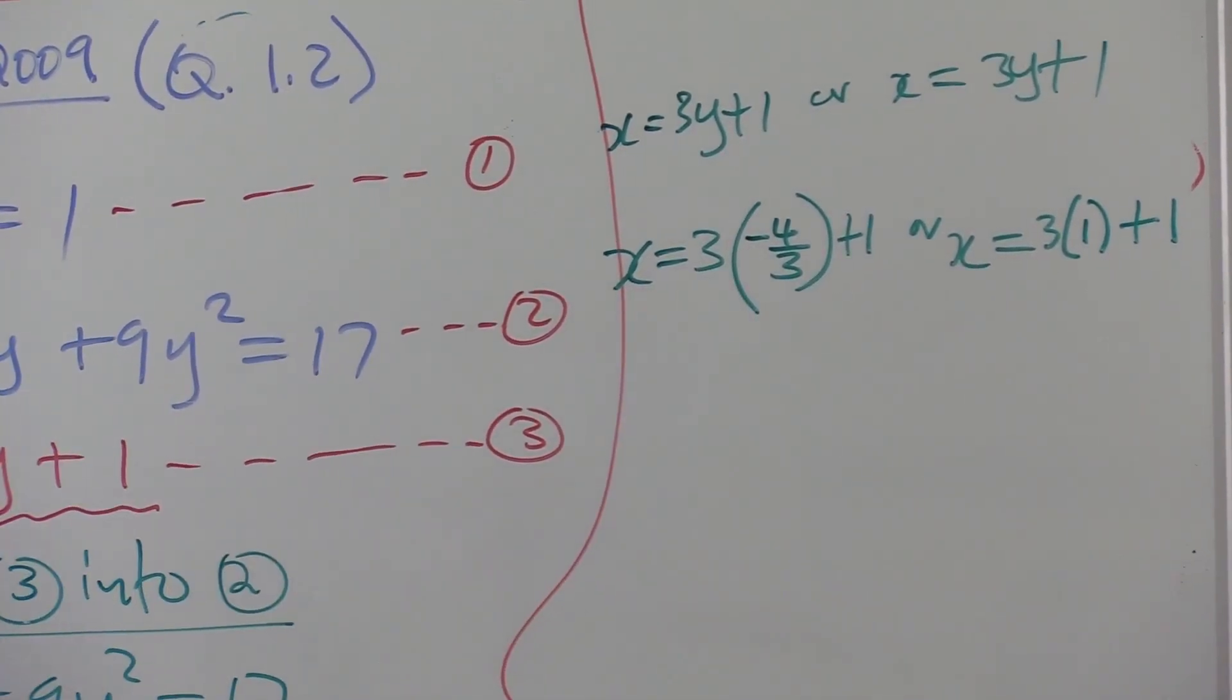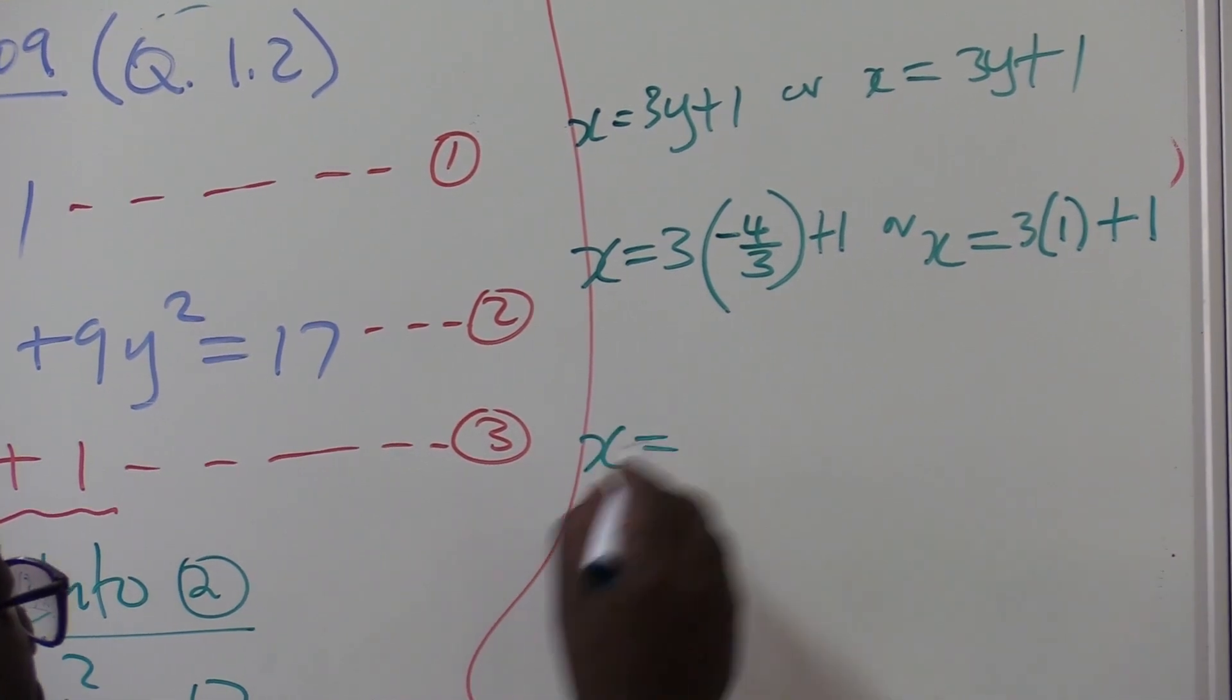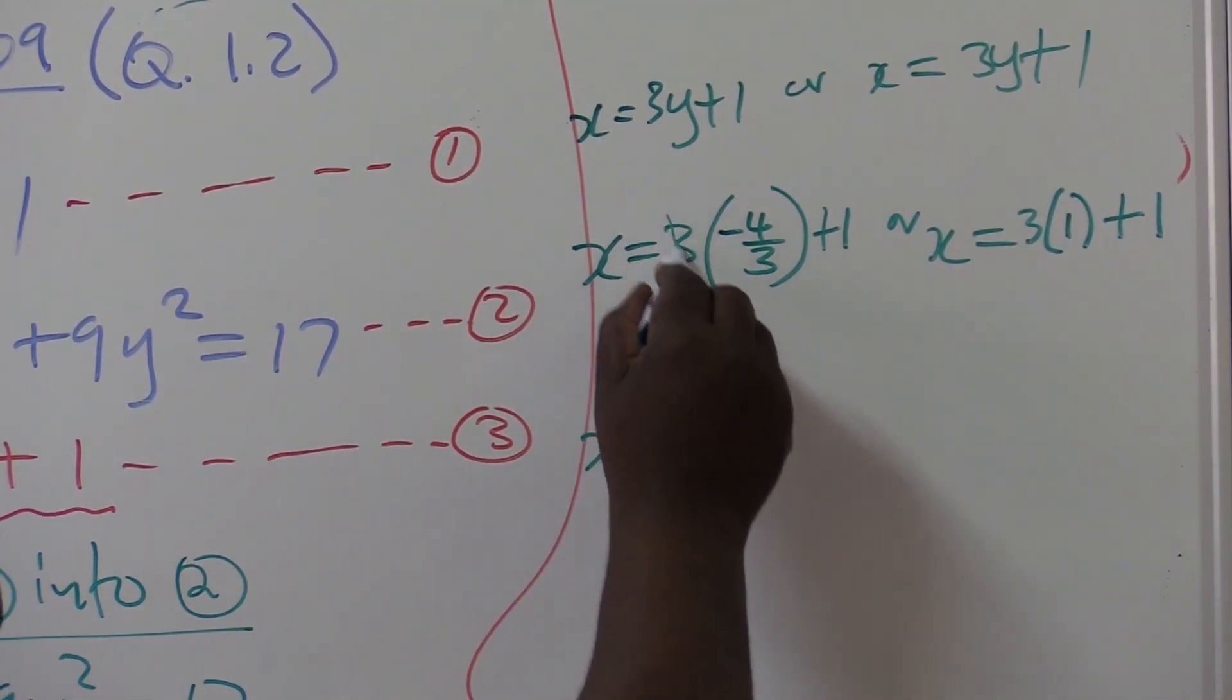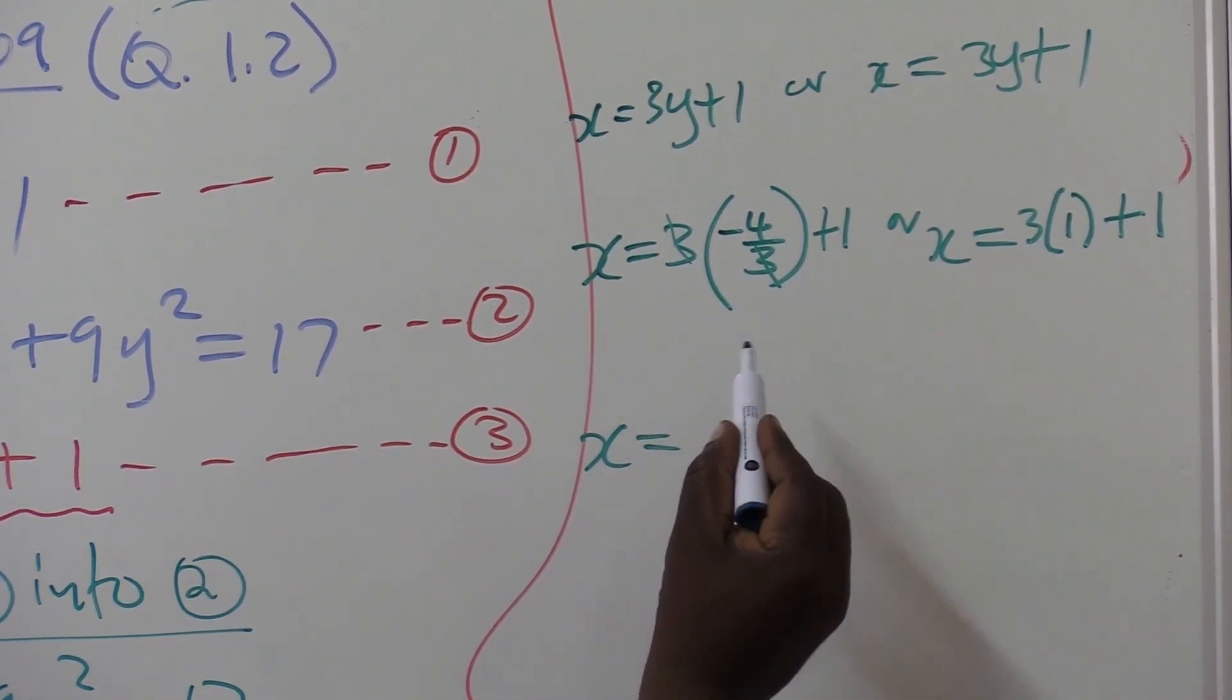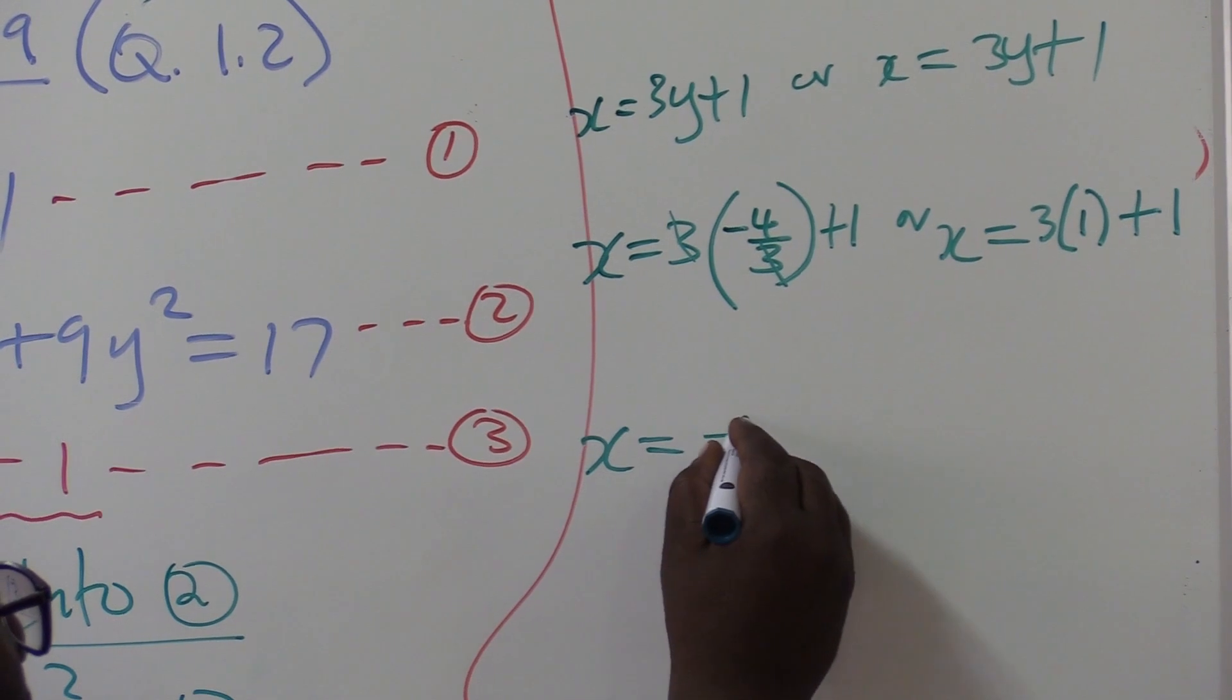Let's work it out. Then, x equals, this divides, we are left with minus 4. What is minus 4 plus 1? It is minus 3.